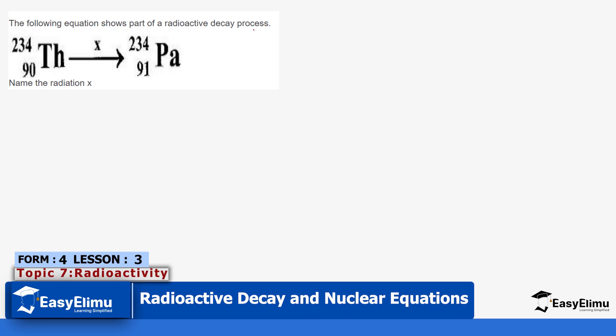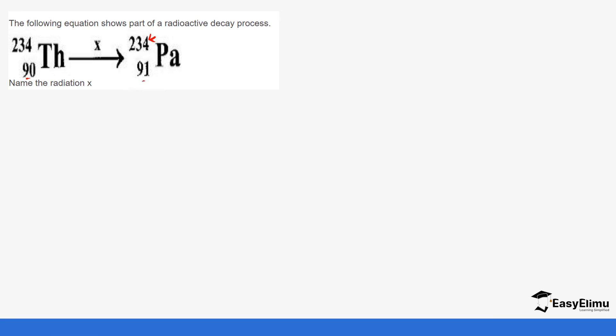Let's do one question in regards to what we have discussed. The following equation shows part of a radioactive decay process. We are identifying the radiation. The first thing we need to see is: is there any change in the mass number? And you notice there is no change. But if you look at the atomic number it increases. Remember we said that is the beta decay that happens because it will release an electron that has a negative 1 as the atomic number. That's it for the equations. You can get more practice in the app to see how you are able to understand the subtopic. See you in the next lesson as we look at the radioactive decay series.